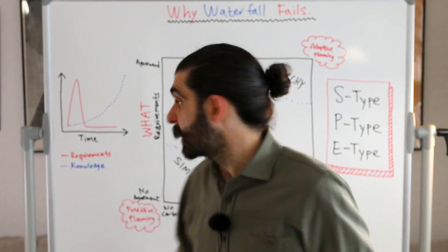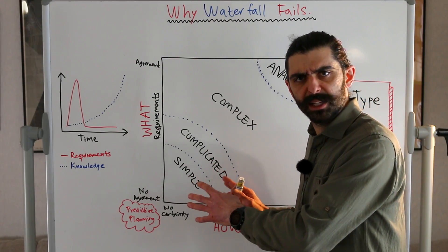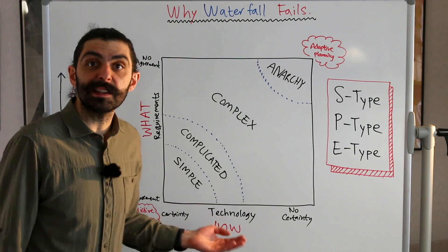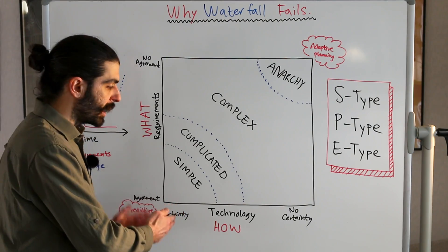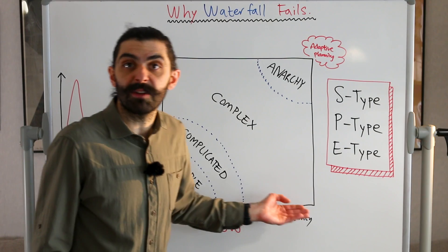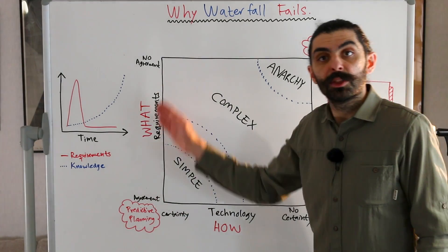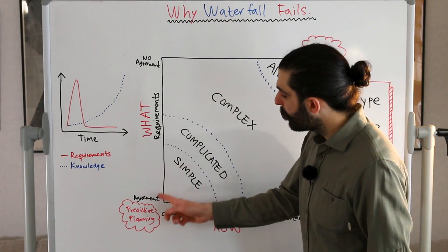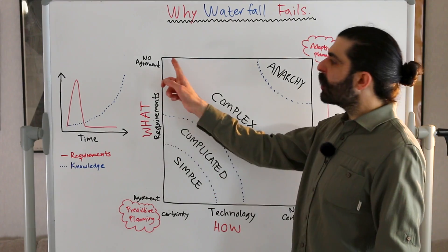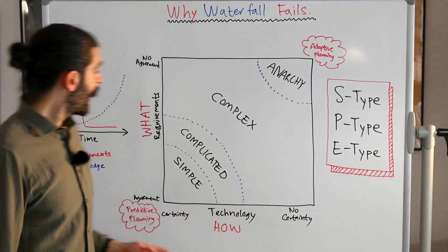Finally, the third and last explanation — the Stacy matrix, or the Stacy complexity model. On the x-axis you have certainty of technology — certainty of how we are going to build a thing. On the far left we are certain how we're going to build it; on the far right we are not certain. On the y-axis we have the "what" — the requirements — and we're talking about the agreement level surrounding what we are going to build. At the bottom we have high agreement; at the top we have almost no agreement around what we're going to build. So on x you have "how," and on y you have "what."